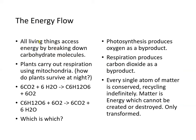Let's briefly mention energy flow. All living things access energy by breaking down carbohydrate molecules. Plants also carry out respiration using mitochondria. How do plants survive at night when they don't do photosynthesis? Respiration. So it takes CO2 and produces sugar during photosynthesis, but then takes its own sugar and breaks it down to produce energy. Photosynthesis produces oxygen as a byproduct, whereas respiration produces carbon dioxide as a byproduct. Every single atom of matter in this process is conserved, recycling indefinitely. Matter converts to energy, which cannot be destroyed or created, only transformed.